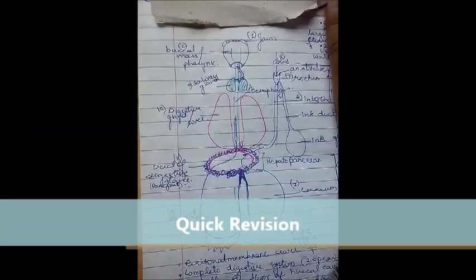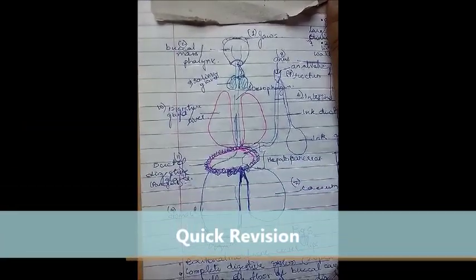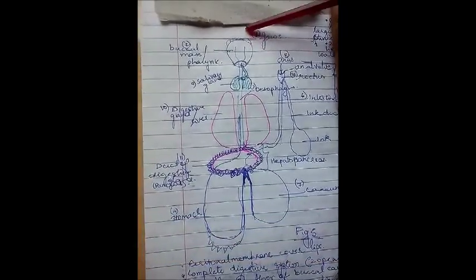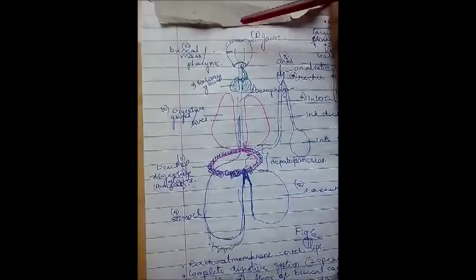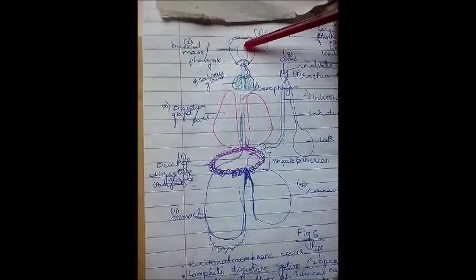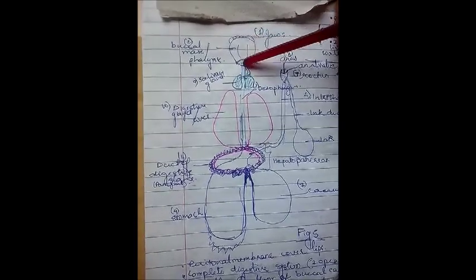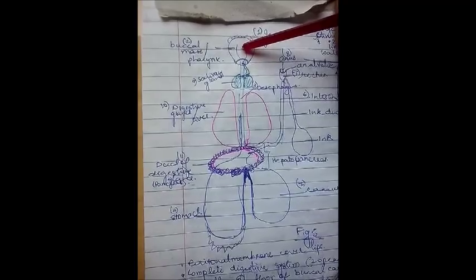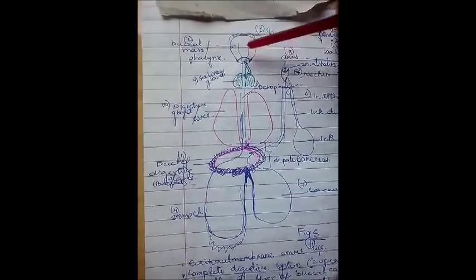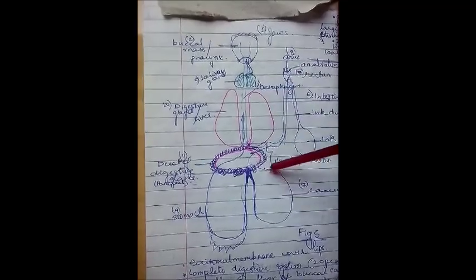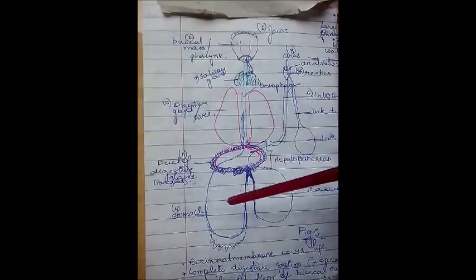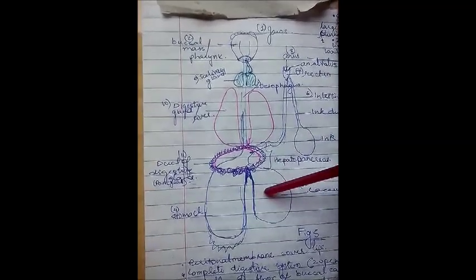To recap: starting from the anterior end, when we cut the head region we could see the mouth, which contained the jaws. We passed down to the posterior side while passing through the pharynx or buccal mass. The esophagus, joined to the mouth, contained on its lateral sides a pair of salivary glands, a pair of digestive glands or liver, and the pancreas. The esophagus ran down to the stomach and the cecum, which are two different chambers.